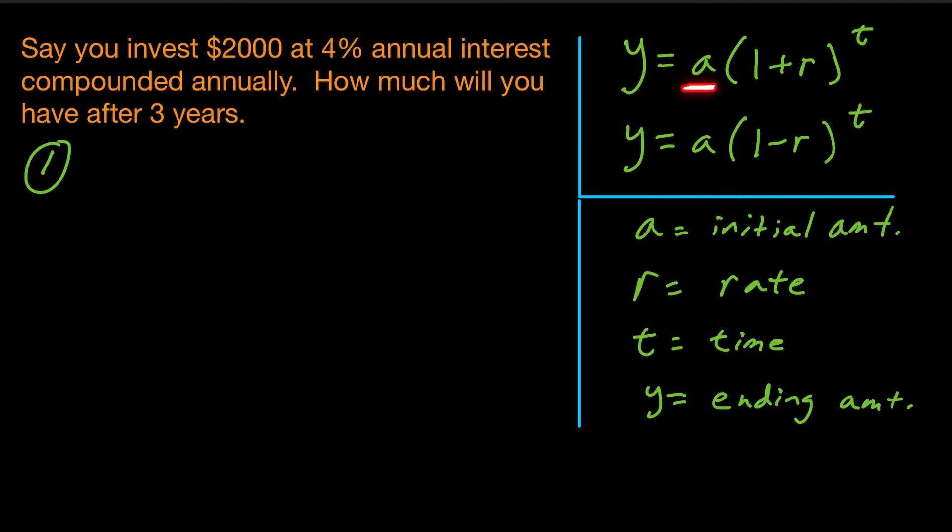So what the a represents in both of these equations, it's the initial amount or the starting amount. And then the r represents the rate of growth or the rate of decay as a decimal. So if they say it's like a 70% rate of growth, then you would use this top equation where you'd say r equals 0.70. So you want to convert that percent to a decimal.